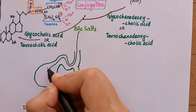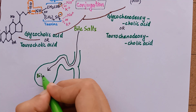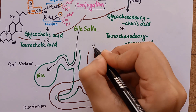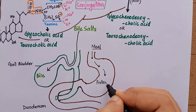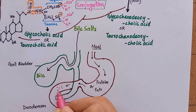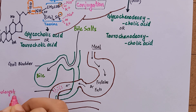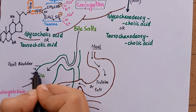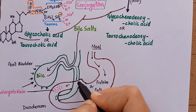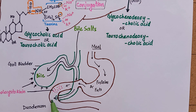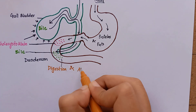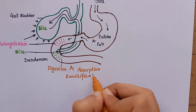Bile salts move to the gallbladder for concentration and storage. After a meal intake, the presence of fats and proteins in the duodenum stimulates the secretion of an enteric hormone called cholecystokinin. Cholecystokinin induces gallbladder contraction and releases bile into the small intestine, where the bile salts aid in digestion and absorption of lipids and also act as emulsifying agents.